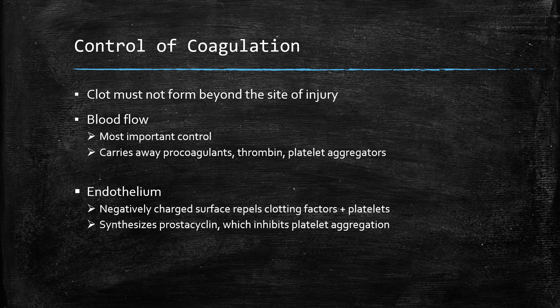The ability to form a stable fibrin clot is clearly lifesaving, but the coagulation cascade must also be tightly regulated — too much clotting is also dangerous. Continued blood flow in the area of injury is by far the most important control mechanism, as it carries away procoagulants, thrombin, and platelet aggregator products. Intact endothelium in the vicinity of the injury also works to control coagulation. This surface is negatively charged, which repels clotting factors and platelets, and the endothelium also synthesizes prostacyclin, which inhibits platelet aggregation.